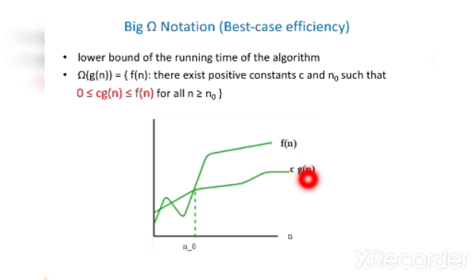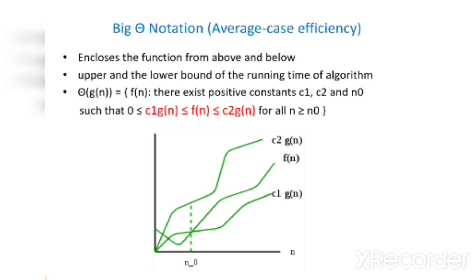Big Theta notation defines the average case efficiency and encloses the function from above and below, giving both the upper and lower bound of the running time of an algorithm. Theta of g(n) = f(n) — there exist positive constants c1, c2, and n₀ such that 0 ≤ c1·g(n) ≤ f(n) ≤ c2·g(n) for all n greater than or equal to n₀.